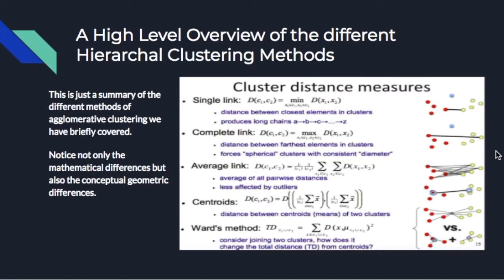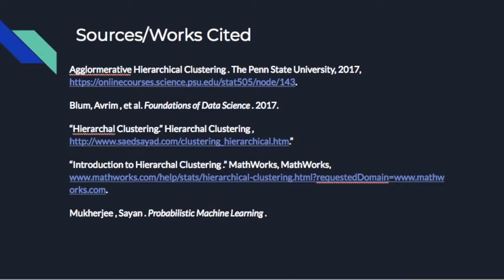Here's a conceptual high-level overview of what we've covered. The diagram on the right highlights the different distance methods: single using the minimum, complete using the maximum, average using all possible distances between points not in the same cluster, centroid using the mean if calculable in that metric space, and Ward's method. Simple diagrams show the differences visually so you can understand the shortcomings, how each works at a basic level, and how each works in terms of the data. Here are our sources — some class textbooks and online resources. Thank you.